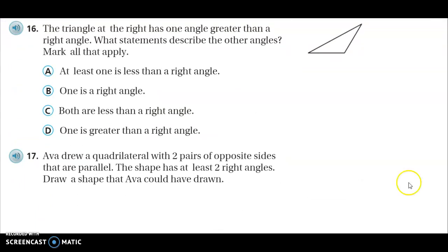Number 16. The triangle at the right has one angle greater than a right angle. What statements describe the other angles? Mark all that apply. At least one is less than a right angle. One is a right angle. Both are less than a right angle. Or one is greater than a right angle.